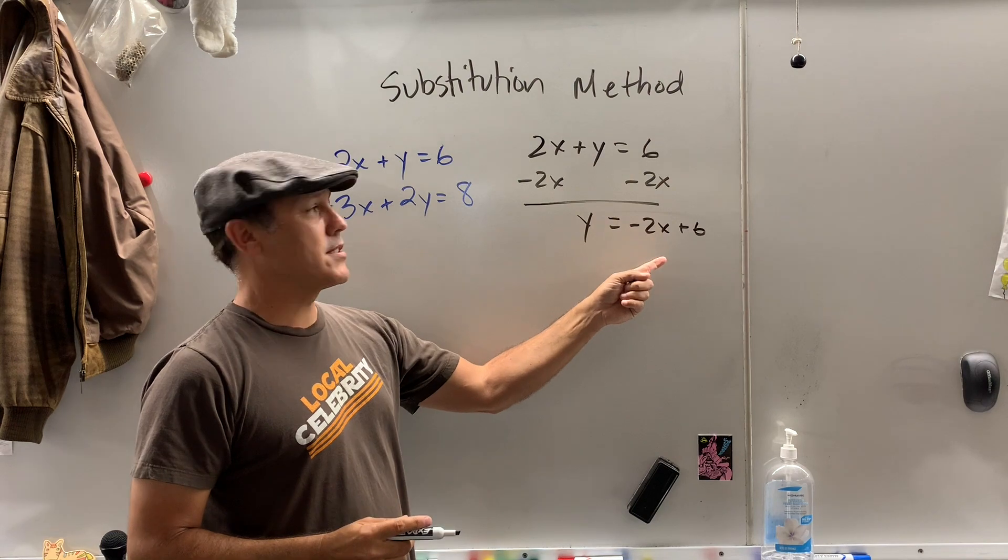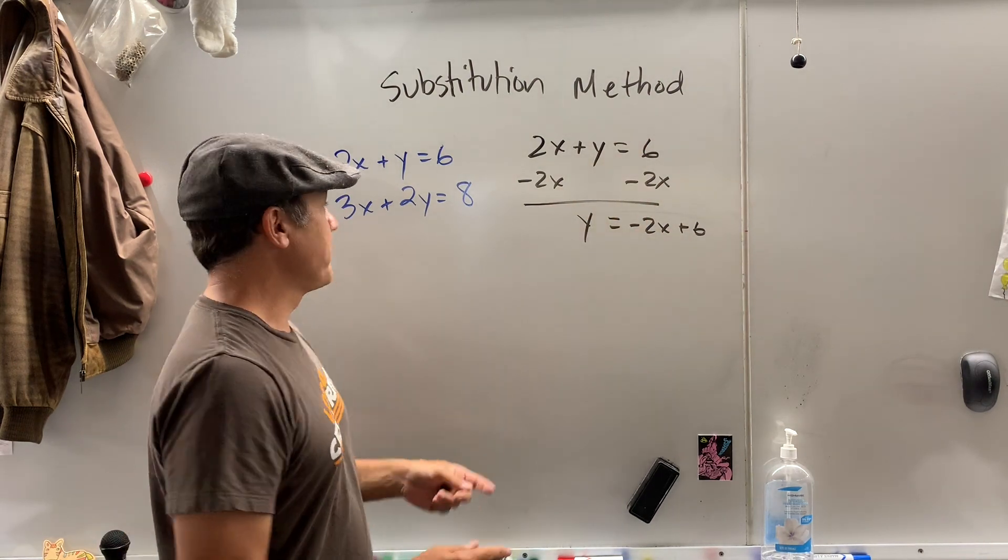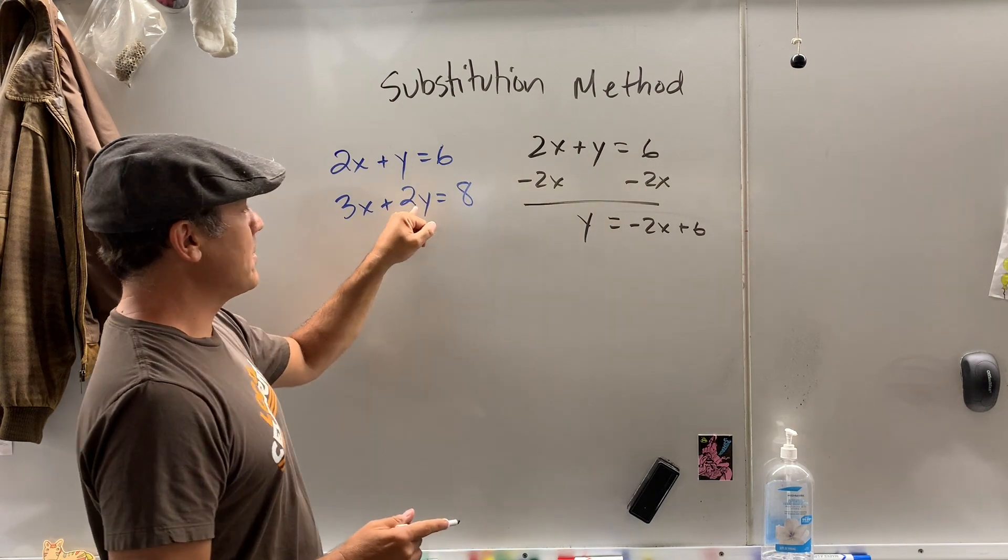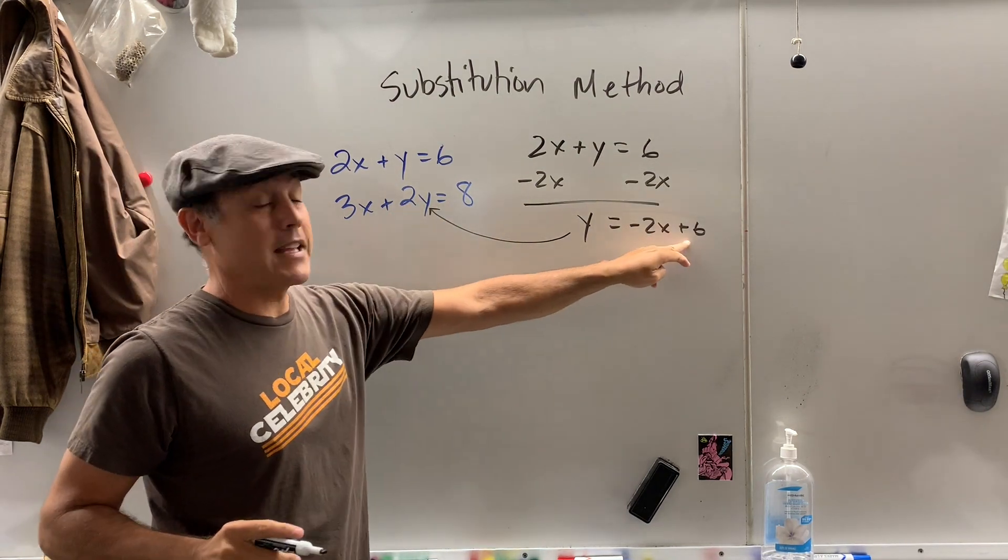Now, why did I put negative 2x plus 6 rather than 6 minus 2x? Personal preference. You can do it however you want. So now I'm going to take this and substitute it in right here. Do you see this? Instead of putting y, I could put negative 2x plus 6.